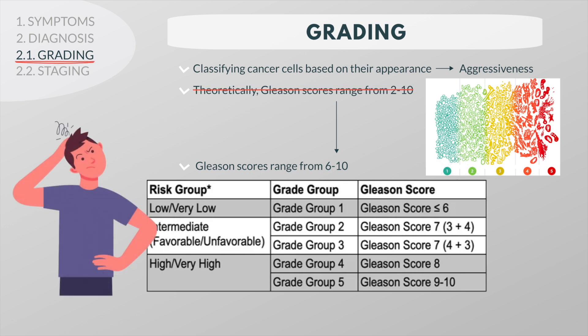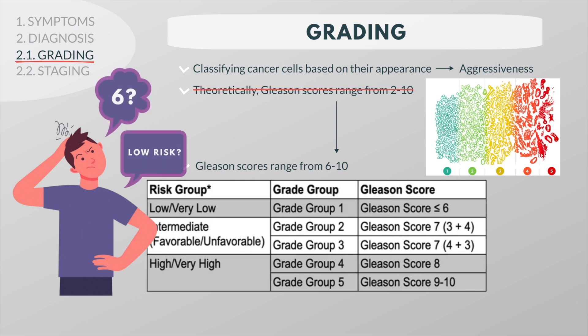But because many prostate cancer cases are extremely slow growing, the Gleason system didn't necessarily do a good job of communicating the risks for these cases. Patients with scores of 6 and 7 didn't have a clear picture of the nature of their particular cancer. To address these issues, a new 5 grade group system was developed in 2014, with 1 being low grade cancer and 5 being high grade cancer.